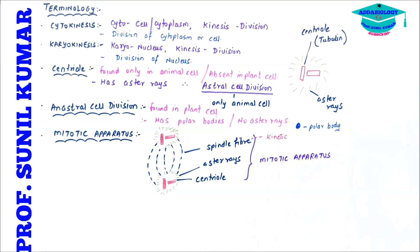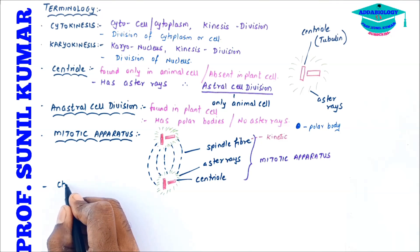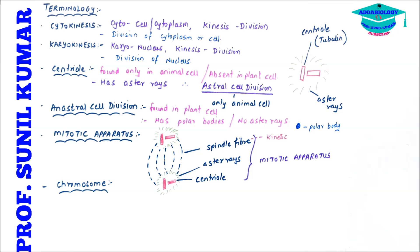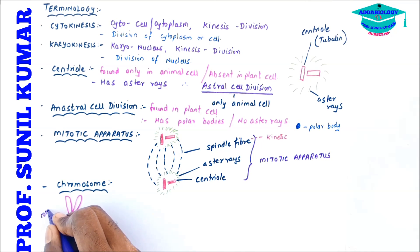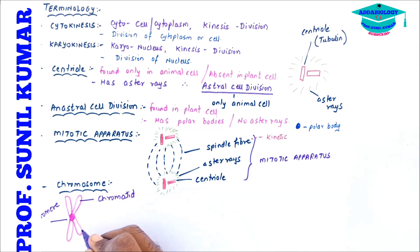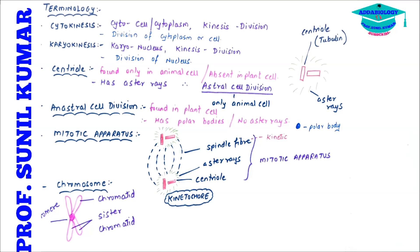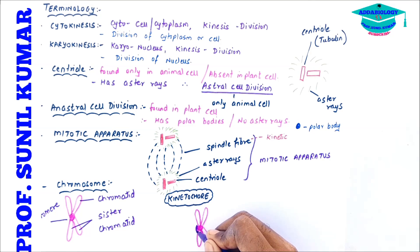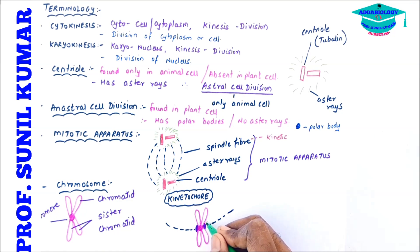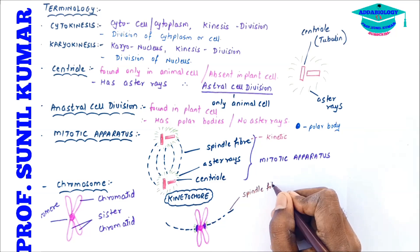A chromosome consists of two sister chromatids. The two chromatids are attached to each other only by the centromere. The small protein-like structure that connects them at the centromere is called the kinetochore.